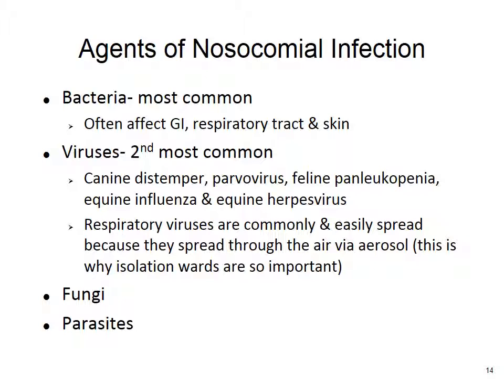Viruses are the second most common cause of nosocomial infections. Common ones include canine distemper, parvovirus, panleukopenia, equine influenza, and equine herpesvirus. Respiratory viruses are easily spread through aerosol, which is why isolation wards are so important. Isolation wards typically have negative pressure — they suck air in from the rest of the clinic rather than pushing it out — preventing airborne transmission of respiratory viruses. Fungi and parasites can also cause nosocomial infections, though this is much less common.